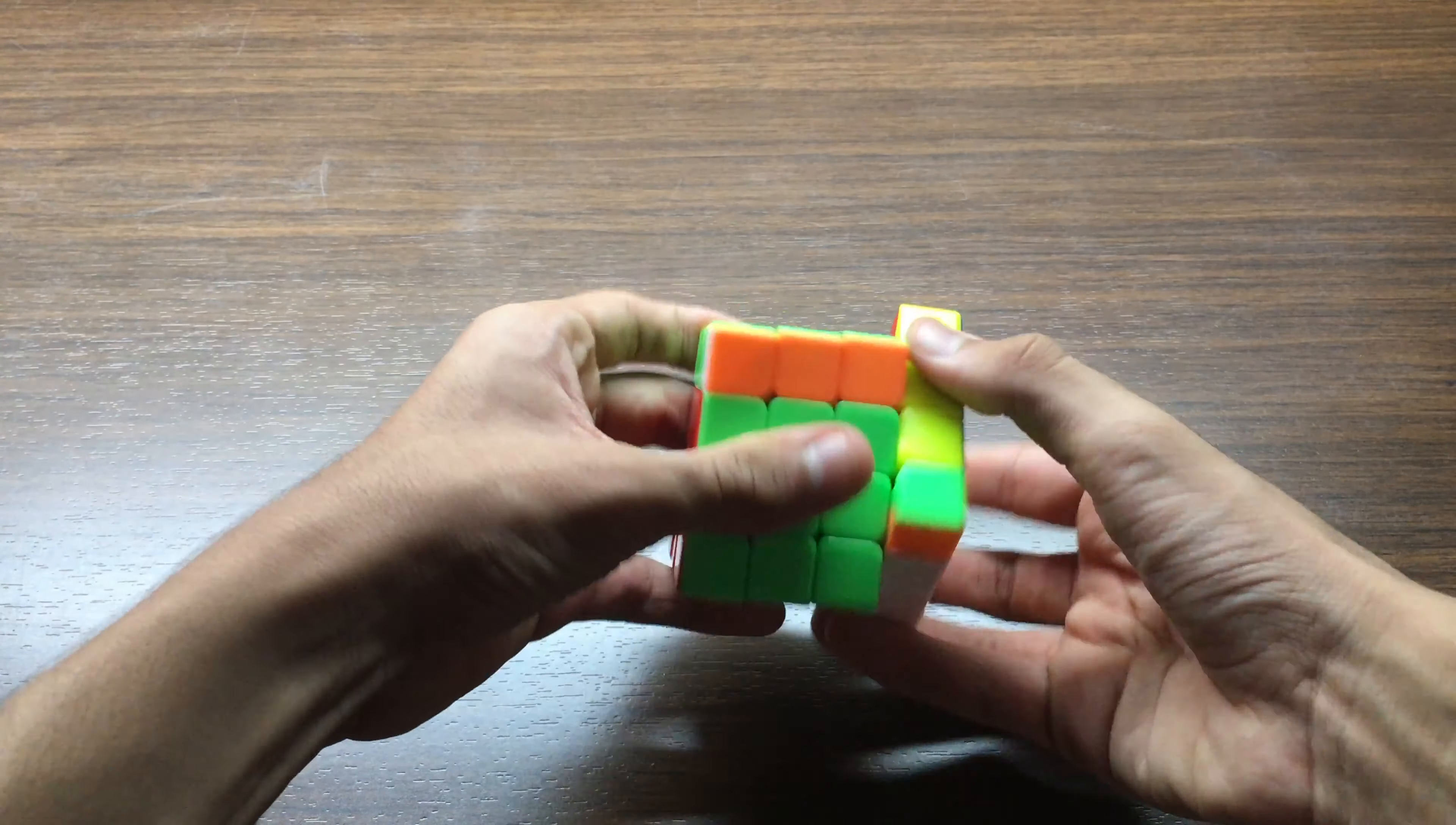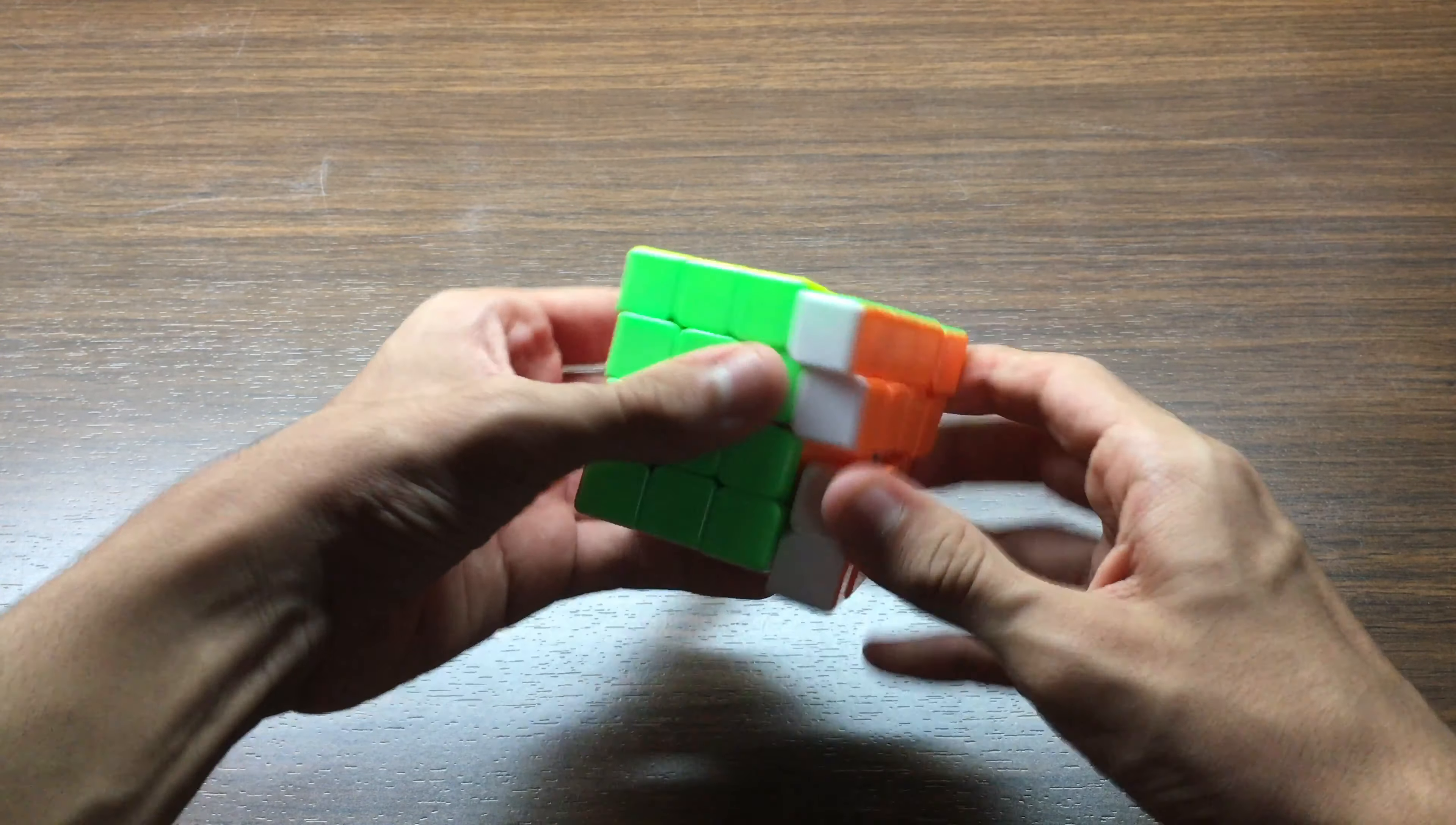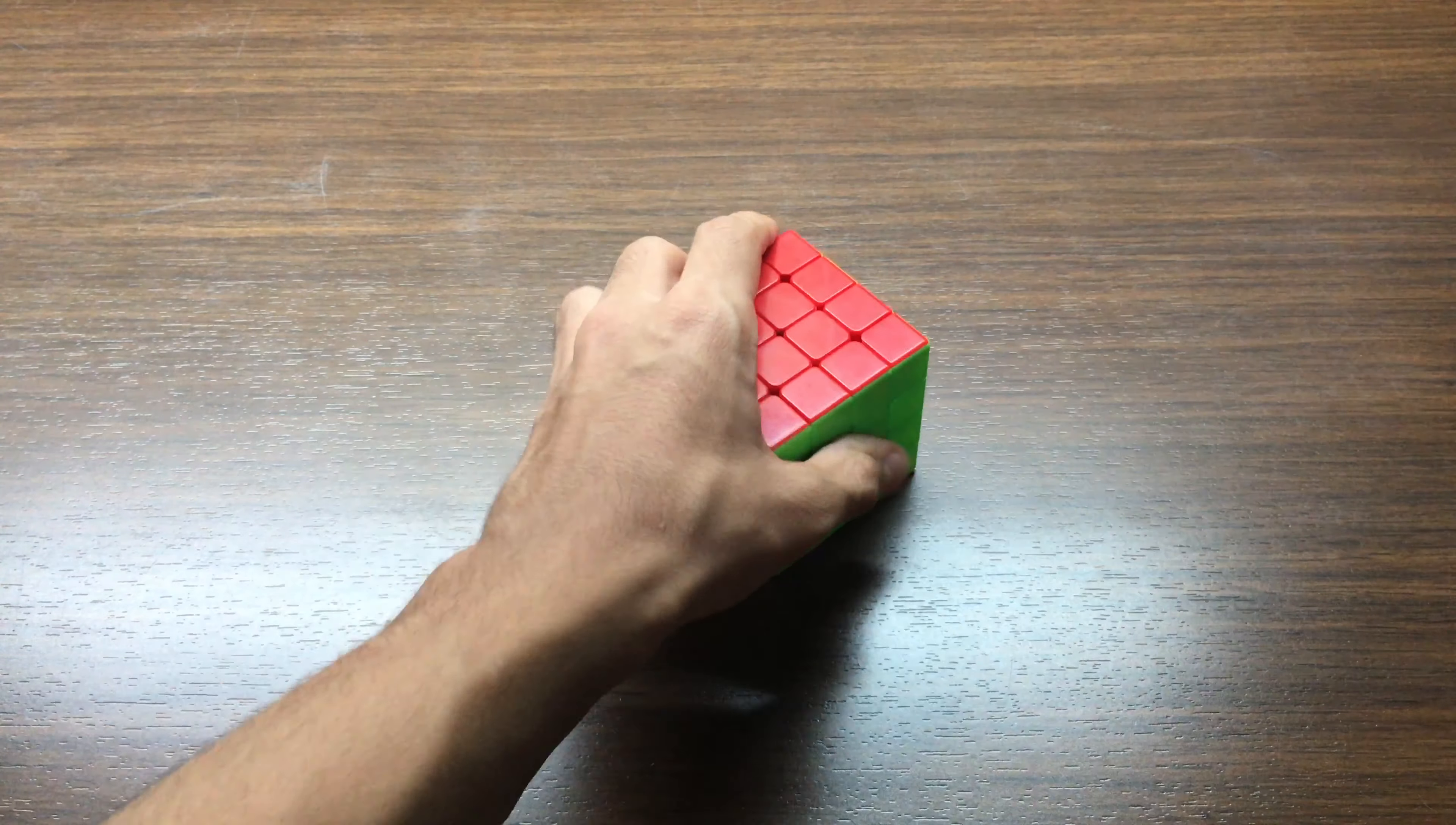Moving on to 4x4, this is my main the Moyu Aosu GTS 2M. My goal for this competition is to get a sub 57 average and hopefully podium.